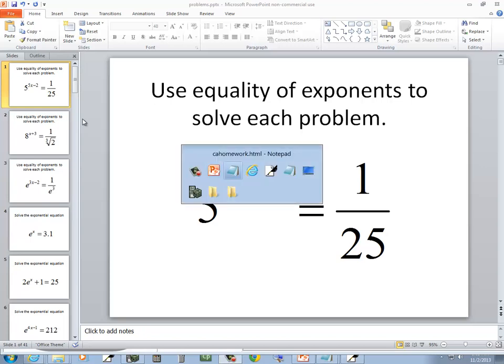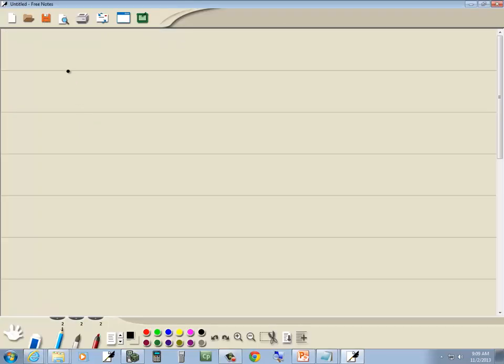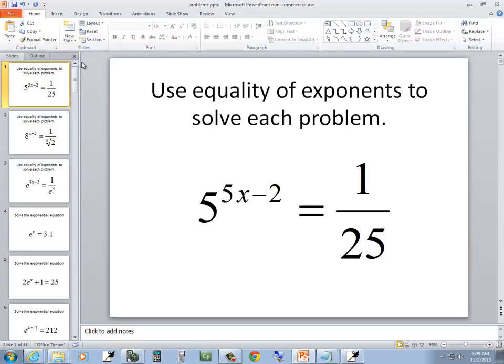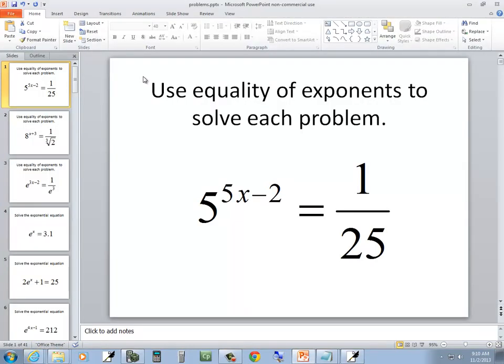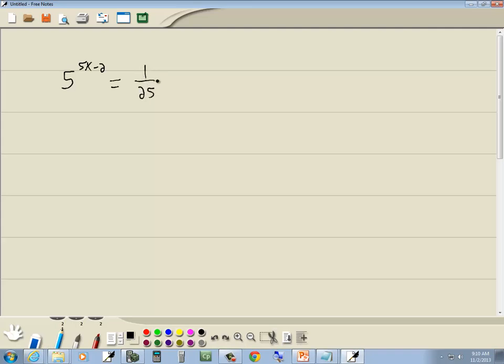Let's take a look at this problem. We've got 5 to the 5x minus 2 equals 1 over 25. Well, I can see I can rewrite the 25 as 5 squared, so let's start there.